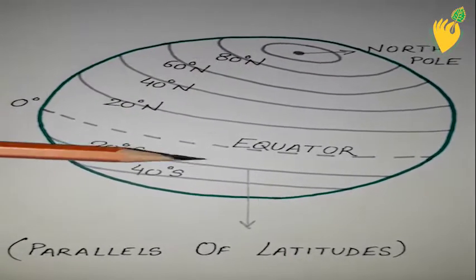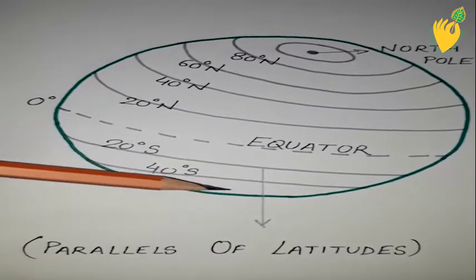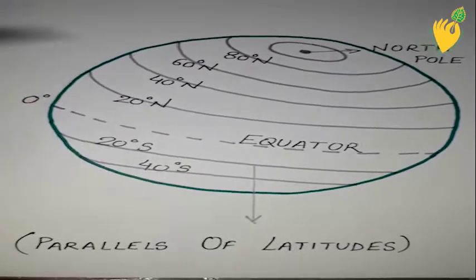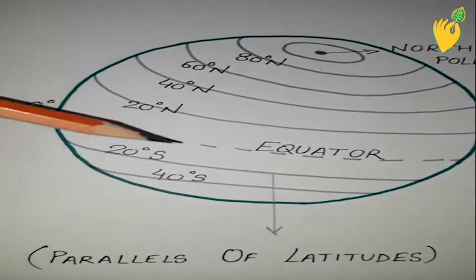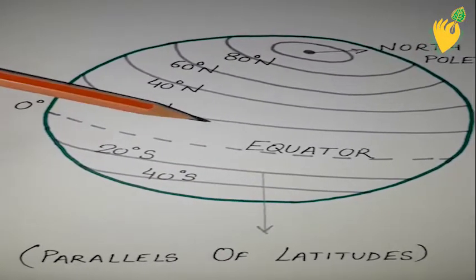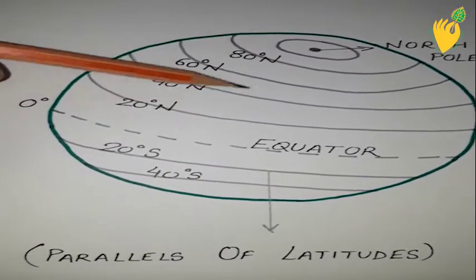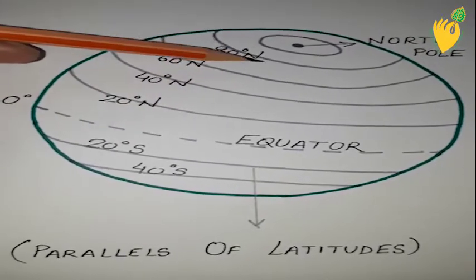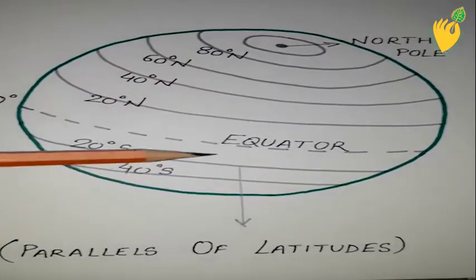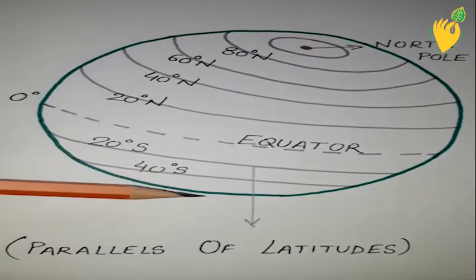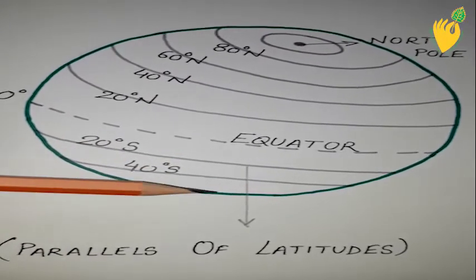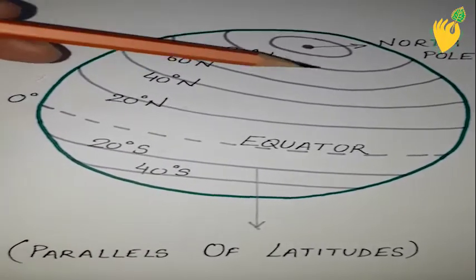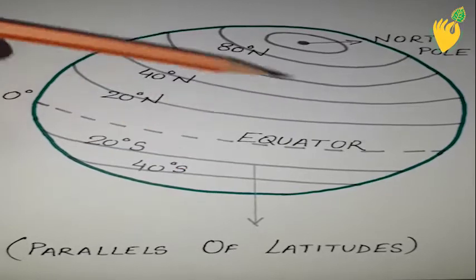The lines are marked off at an interval of one degree north from the equator or south from the equator. Overall, there are 90 lines of latitude in the northern hemisphere and 90 lines in the southern hemisphere, making a total of 180 lines in both hemispheres.